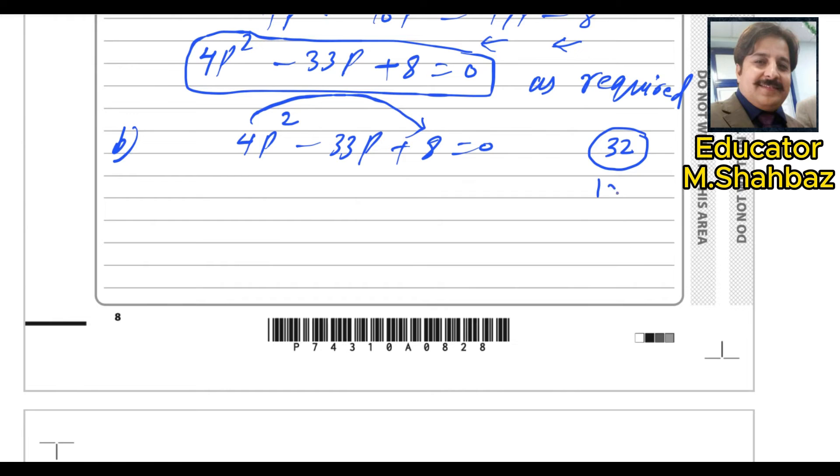Write all the pairs for 32: multiply 16 and 4 multiply 8. So which pair is making by adding or subtracting the middle number? The only pair that is making 33 is 32 and 1. So we choose this pair. So because we need minus 33, so both numbers should be negative. You can split this one into minus 1 and minus 32. It is the rule, 4p squared minus 1p minus 32p plus 8 equals to 0.